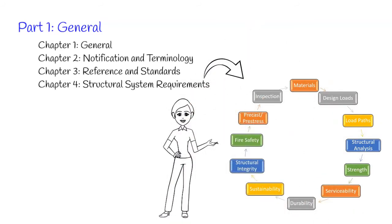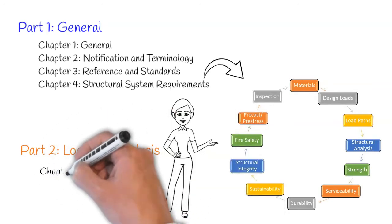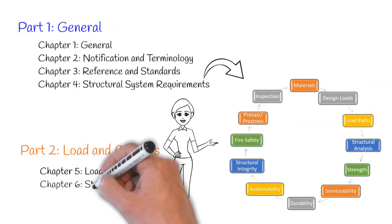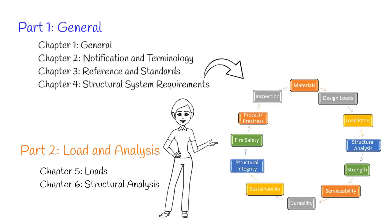In Part 2, Loads and Analysis, ACI 318 refers to ASCE 7 for the minimum design loads in Chapter 5. All of the analysis related provisions are in Chapter 6 Structural Analysis, including simplified, first order, second order, linear, non-linear analysis, slenderness of columns, material and section properties.